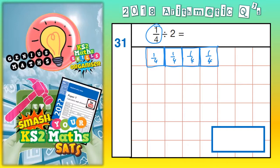If we divide each of those quarters by two — this quarter divided by two, this quarter divided by two, this quarter divided by two, this quarter divided by two — you've then got one, two, three, four, five, six, seven, eight pieces.